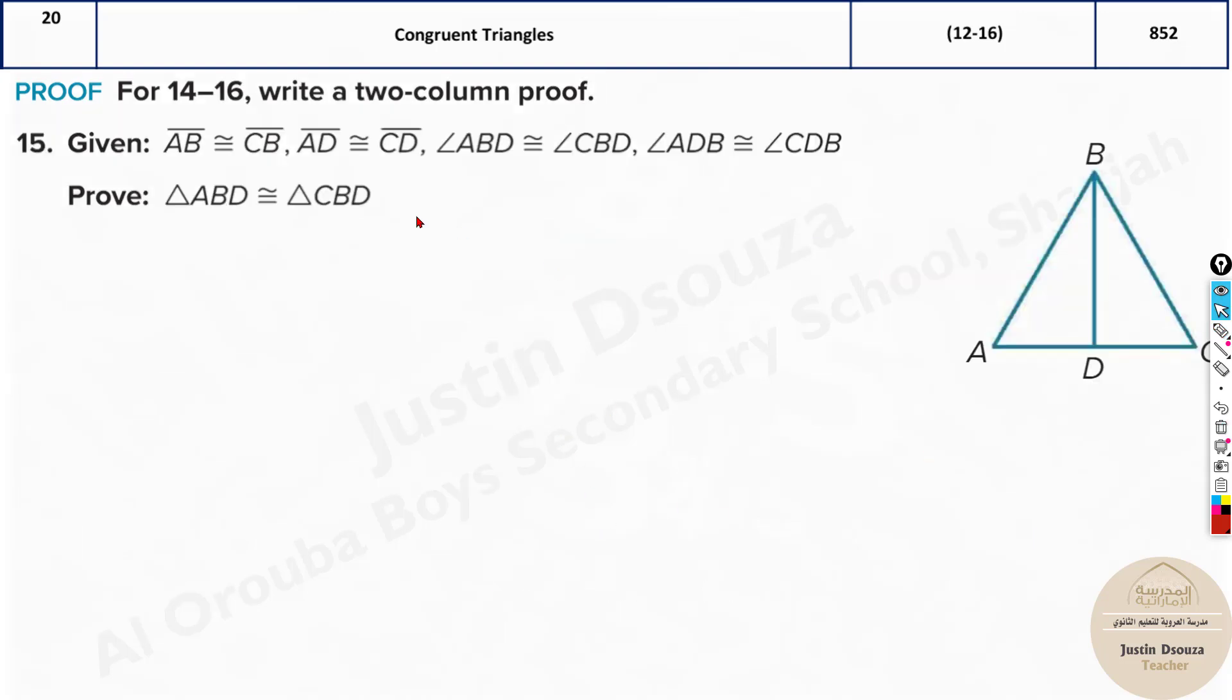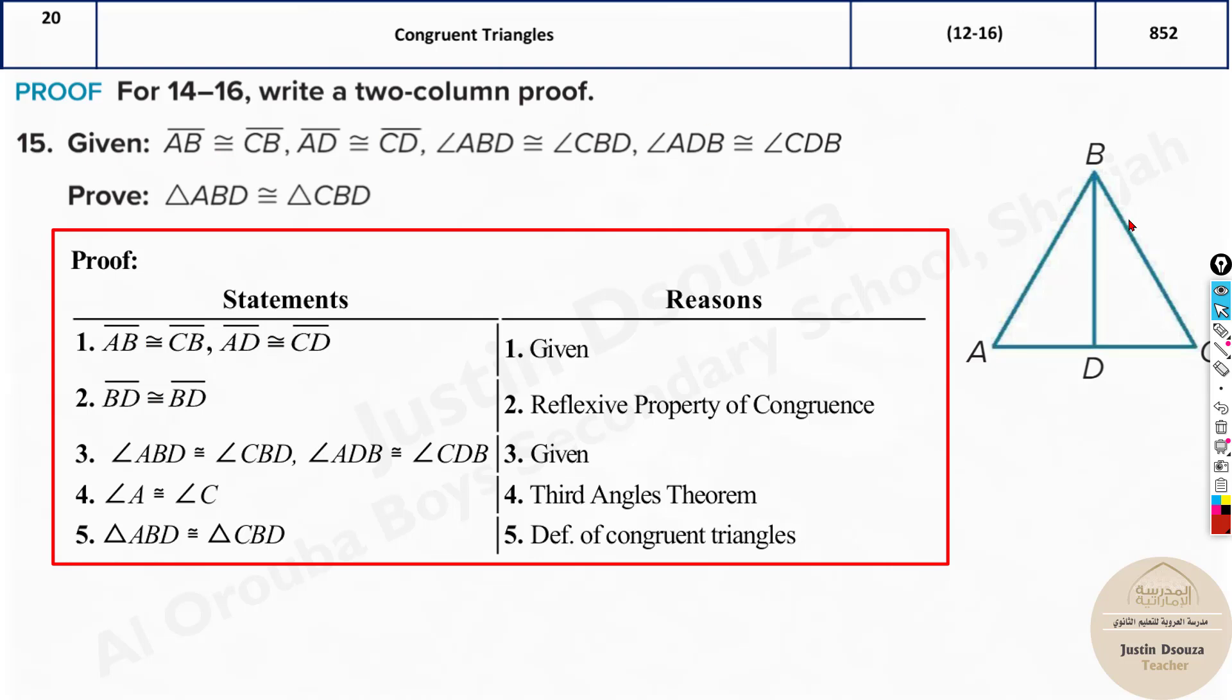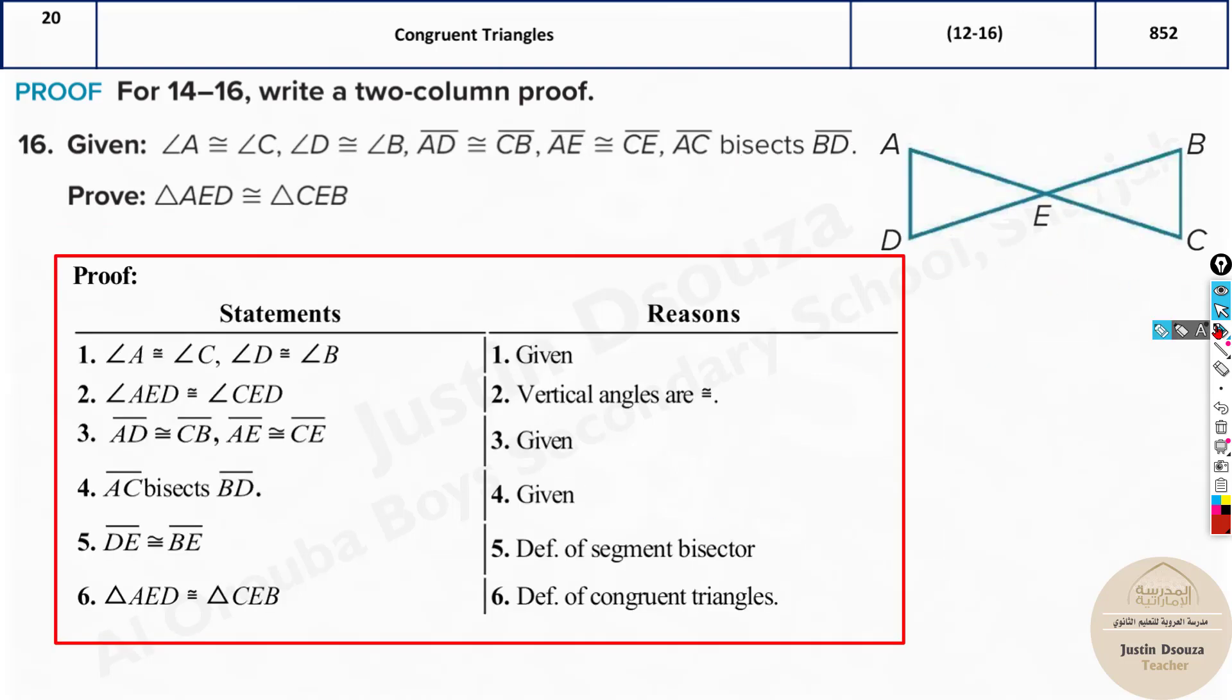If we need to write in detail, same thing over here. All the sides - two sides are given, BD is reflexive property. What about the angles? They have told the two angles they clearly mentioned. ABD and CBD are equal. ADB and CDB are equal. Over here, these two angles are vertical opposite angles, vertical angles. So that's why they're congruent to each other.